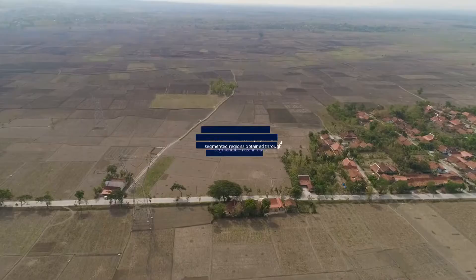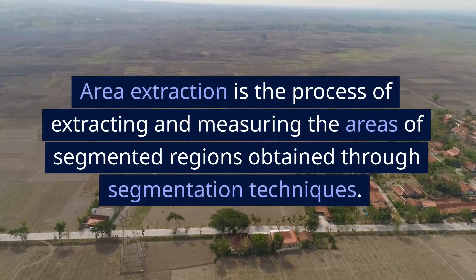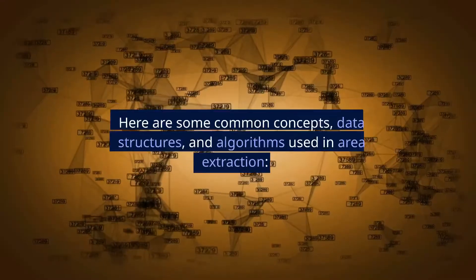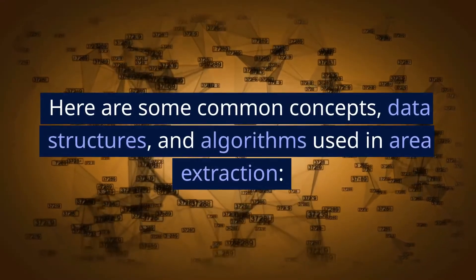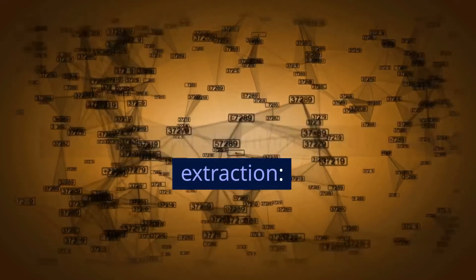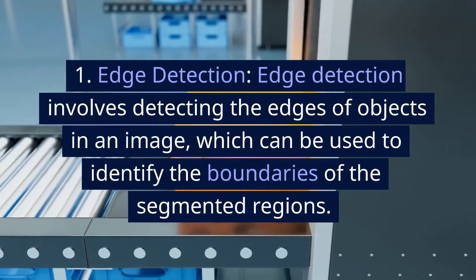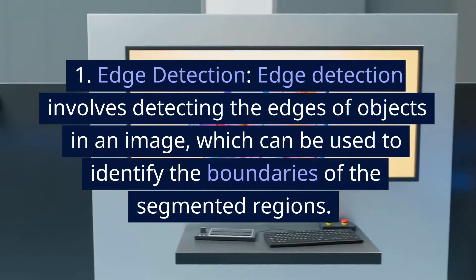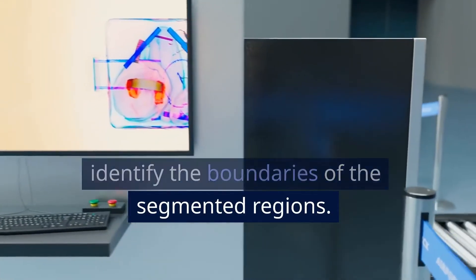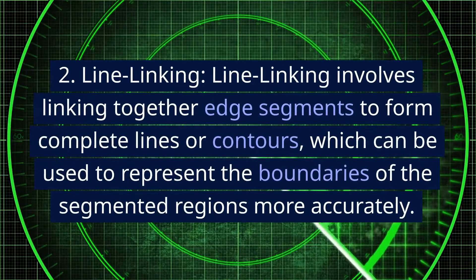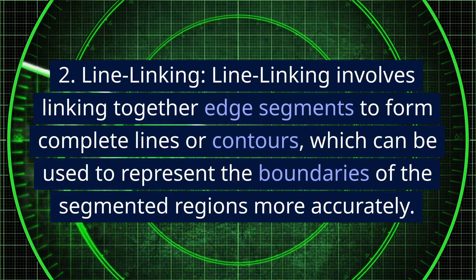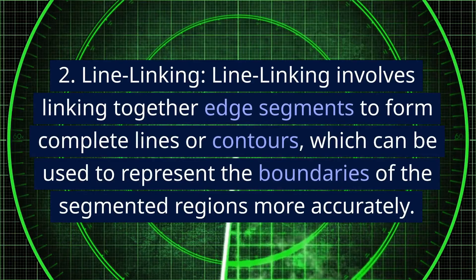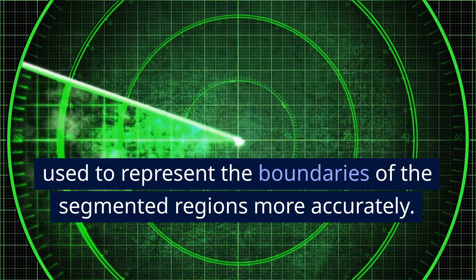Area extraction is the process of extracting and measuring the areas of segmented regions obtained through segmentation techniques. Common concepts and algorithms used in area extraction include: 1. Edge detection — detecting the edges of objects in an image to identify the boundaries of segmented regions. 2. Line linking — linking together edge segments to form complete lines or contours, which can be used to represent the boundaries of segmented regions more accurately.